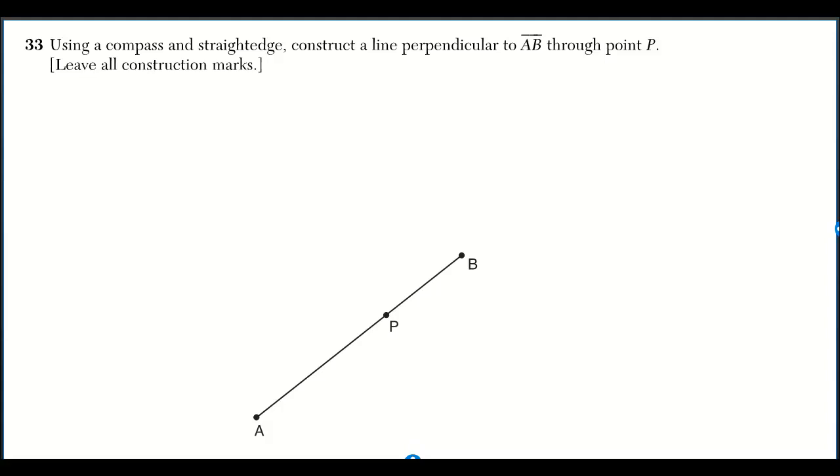Using a compass and straight edge, construct a line perpendicular to AB through point P. To do this on a diagonal line is going to be the same as a horizontal line.